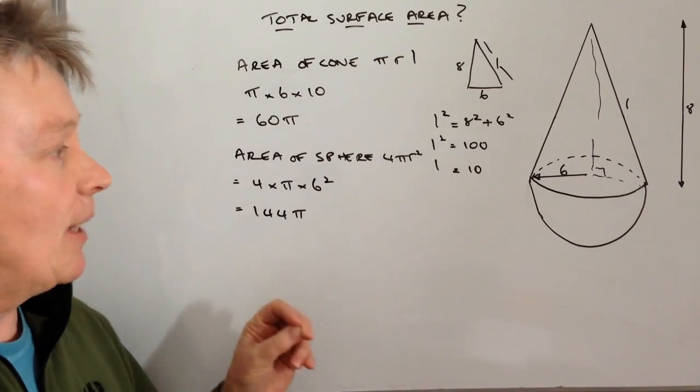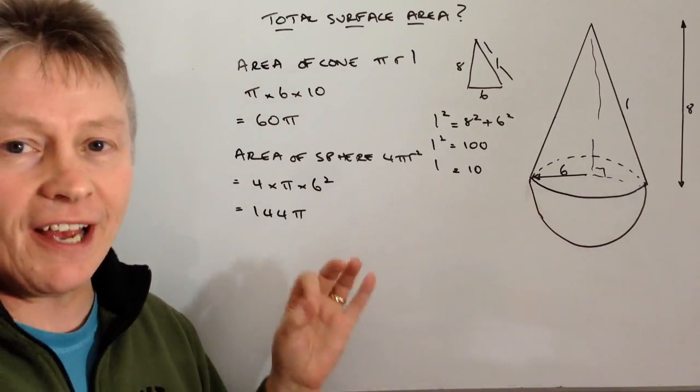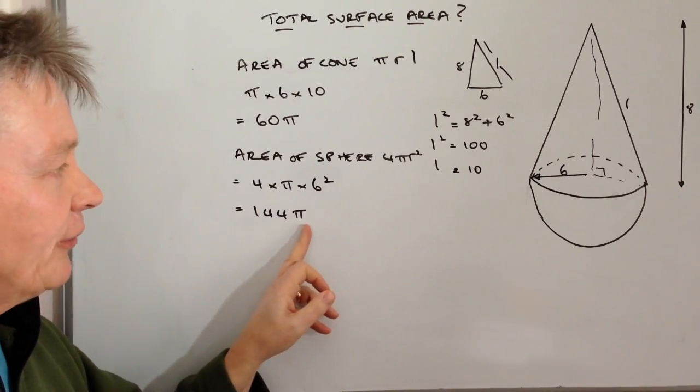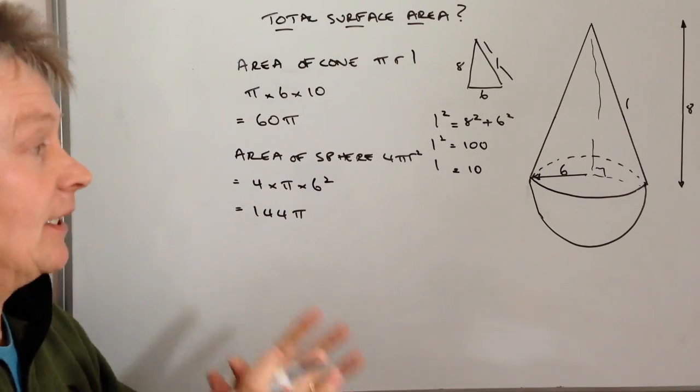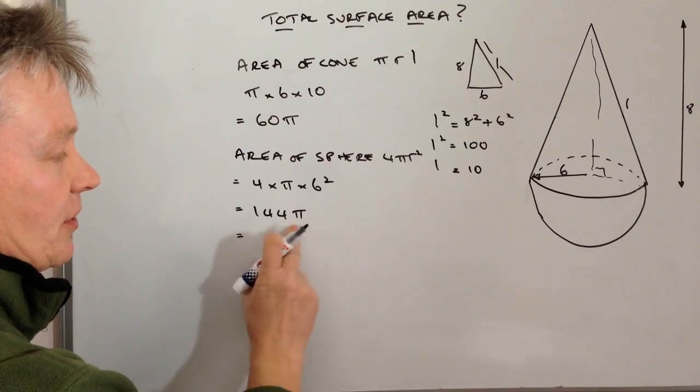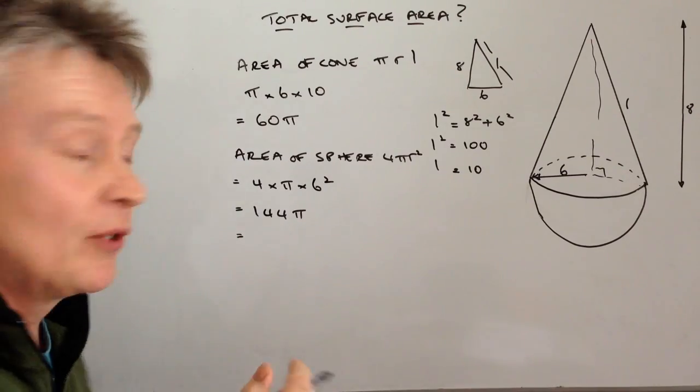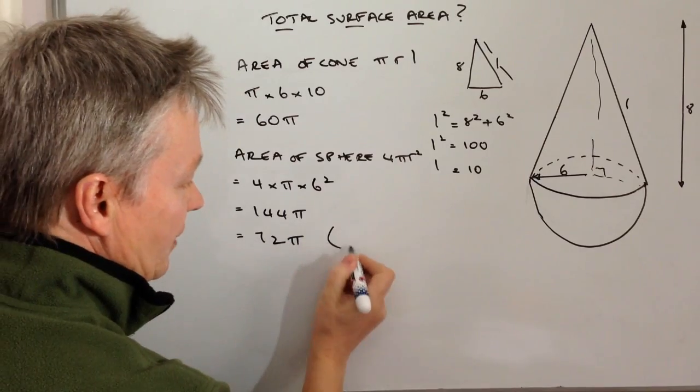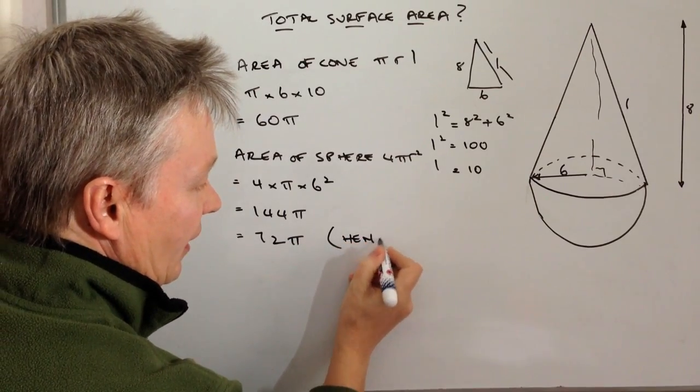But you need to remember this is a hemisphere, it's half of this. So in actual fact the 144 would be if it was a complete ball. It's not, it's half a ball, so I need to divide that through by 2. So therefore the hemisphere we're interested in is 72π, and that's the hemisphere.